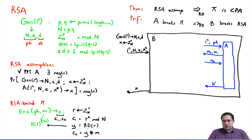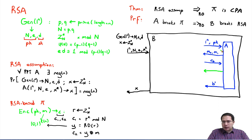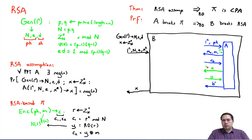Now we have defined the games. Since we are in the random oracle model, A also has access to the random oracle. A will send some input z to the random oracle and expects some y back. This interaction with the random oracle is part of A's interaction.